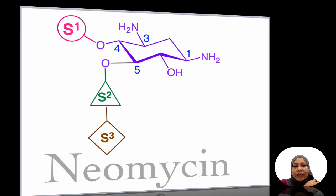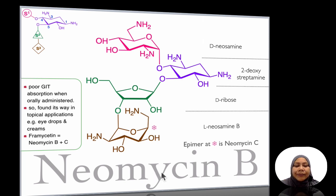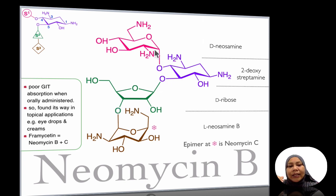The second one is neomycin. The aglycone is 2-deoxy streptamine, linked to one sugar, D-neosamine, on one side. On the other part of the 2-deoxy streptamine, it is linked to D-ribose and L-neosamine B. This is neomycin B. You can see that the whole molecule is quite polar, so it has poor GIT absorption. These are also linked glycosidically, making them unstable under strong acid.